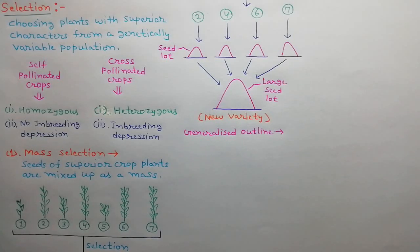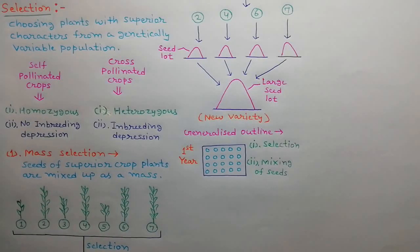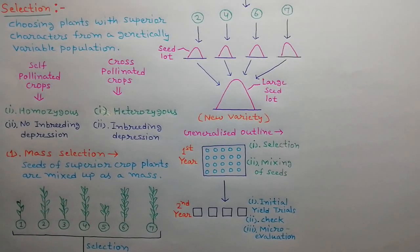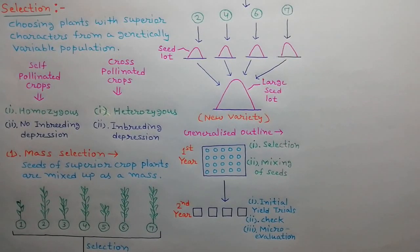We can elaborate the mass selection method by a generalized outline. In the first year, 200 to 1000 superior and similar plants are selected from a genetically variable population of crop plants, and their seeds are collected and mixed up as a mass. In the second year, the mass of seeds is tested by initial yield trials, using standard varieties as a check to compare the yield, and the populations obtained from selection are micro-evaluated.